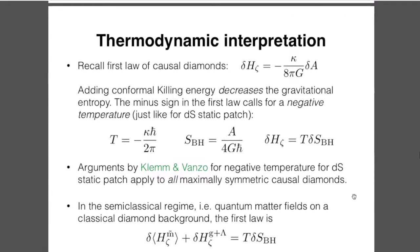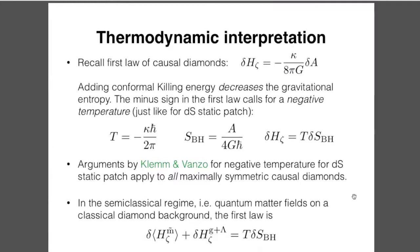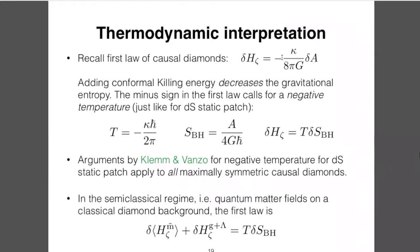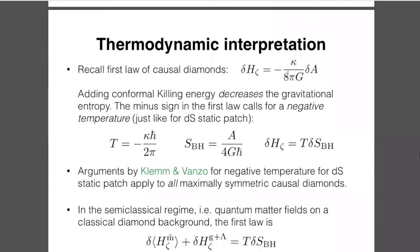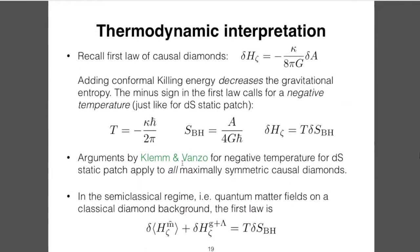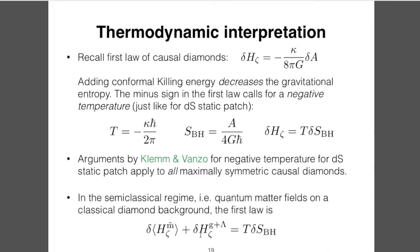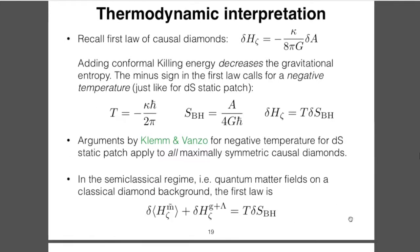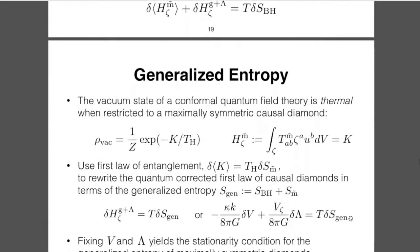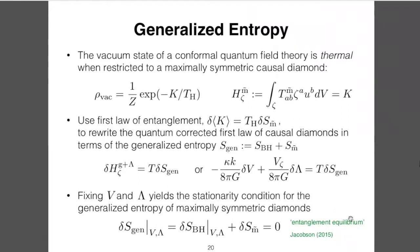Let me now go to the thermodynamic interpretation. We saw this minus sign, and we have to impose a negative temperature to get a correct first law. All the previous arguments for negative temperature in de Sitter also apply to maximally symmetric causal diamonds. In the semi-classical regime, including quantum corrections to matter, we separate the matter term and obtain this type of first law. The free energy is defined as the Hamiltonian generating conformal Killing flow minus the negative temperature times the Bekenstein-Hawking entropy. This free energy is stationary at fixed temperature because of the first law.